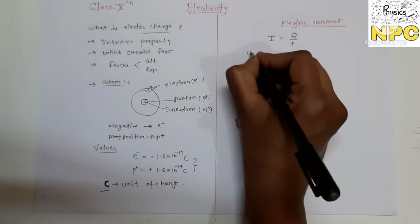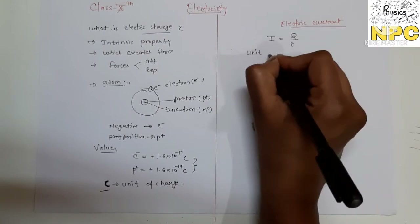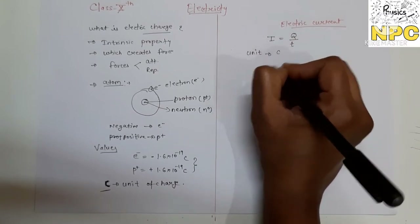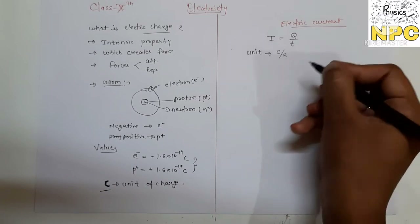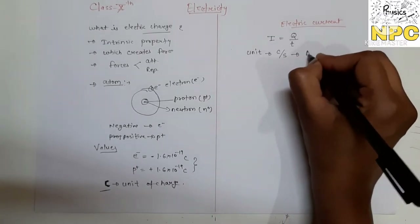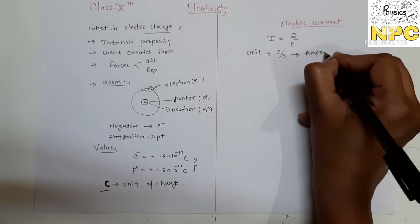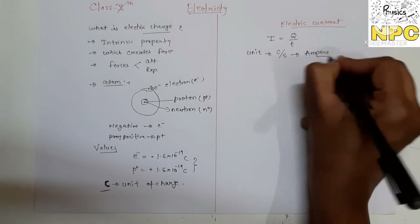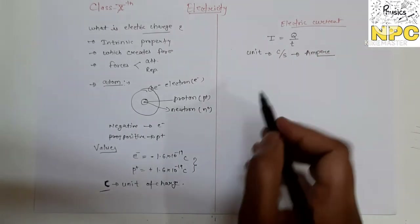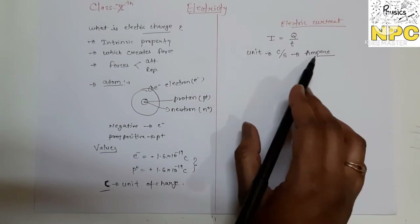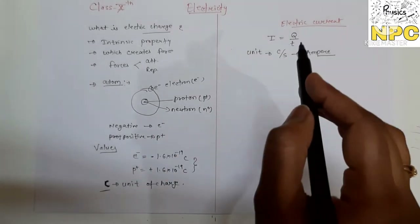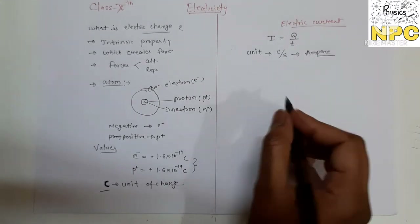Now let's talk about the unit of electric current. The unit of Q is coulomb and T is seconds, so coulomb per second is called ampere — named after the physicist Ampere. So this is the basic definition of electric current.